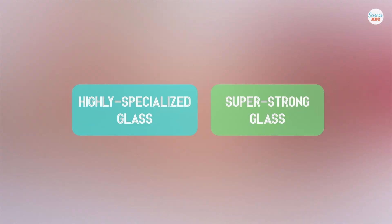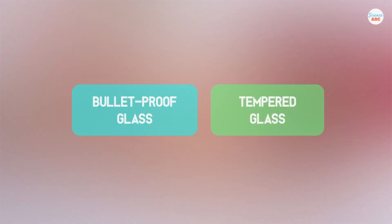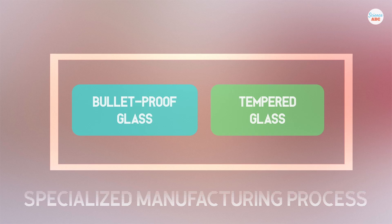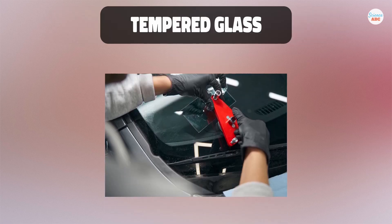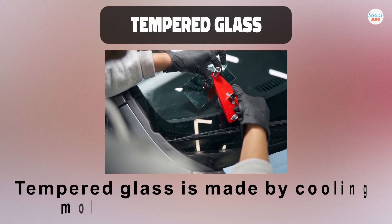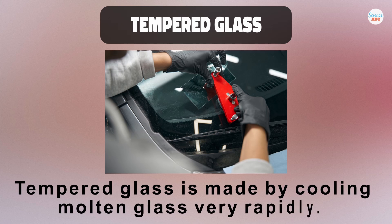Highly specialized and super strong variants of glass, such as bulletproof or tempered glass, are made through a different manufacturing process. Sandwiching multiple layers of glass and plastic is done to make bulletproof glass. Tempered glass, used in car windshields, is usually made by cooling molten glass very rapidly to make it much harder.